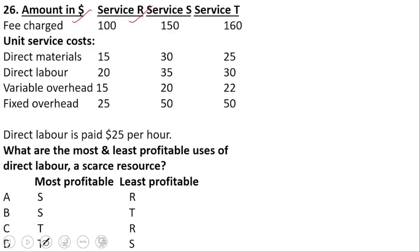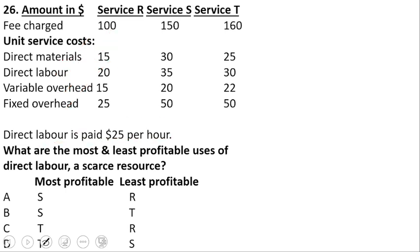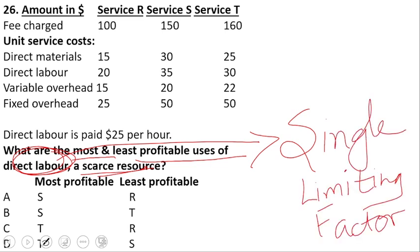With this information, let's tackle the next question. The amounts are given in dollars and we have three services: R, S, and T — equivalent to three products. The fees charged are $100 for R, $150 for S, and $160 for T — this is the selling price. Direct material, labor, and variable overheads are given. Direct labor is paid at $25 per hour. The question asks for the most and least profitable uses of direct labor, which is identified as a scarce resource — a case of single limiting factor.